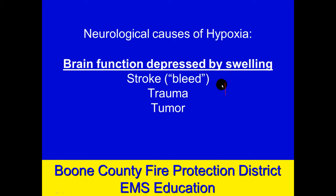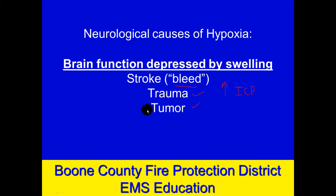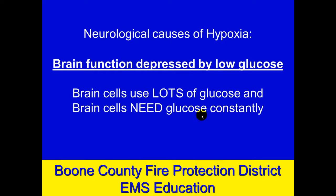Brain function can also be depressed by swelling inside the skull, or an elevation in what's called ICP — intracranial pressure. That can happen from a hemorrhagic stroke, which is a bleed in your brain. Inside your skull there are only supposed to be three things: brain tissue, blood inside the blood vessels, and a little bit of cerebrospinal fluid. There should not be blood outside the vessels, tumors, or foreign objects. Direct injury to the brain — from a medical cause like a bleed, a traumatic cause, or a tumor — can cause brain function to be depressed, which typically causes a slower respiratory rate, adding to problems with hypoxia.